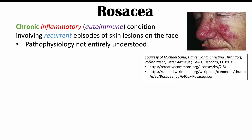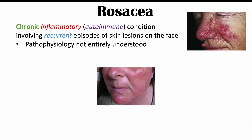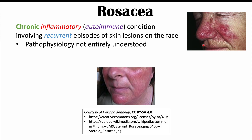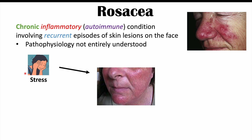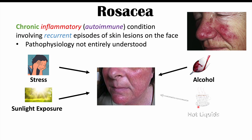The pathophysiology of rosacea is not entirely understood. We know that it is an autoimmune condition, but even though we don't know the pathophysiology entirely, we do know that certain things can trigger the signs and symptoms. These can include stress, sunlight or ultraviolet light exposure, alcohol, and hot liquids like coffee or tea. For more information, please check out my lessons on the triggers of rosacea.